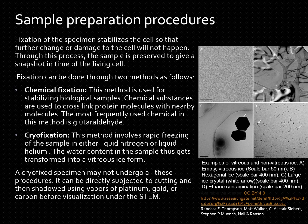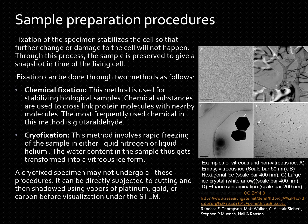Fixation of the specimen stabilises the cell so that further change or damage will not happen. Through this process, the sample is preserved to give a snapshot in time of the living cell. Fixation can be done through two methods. Chemical fixation is used for stabilising biological samples; chemical substances are used to cross-link protein molecules with nearby molecules. The most frequently used chemical in this method is glutaraldehyde, but there are also other types of fixatives available.